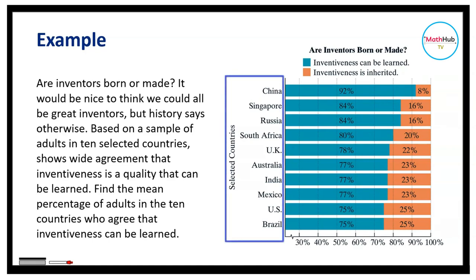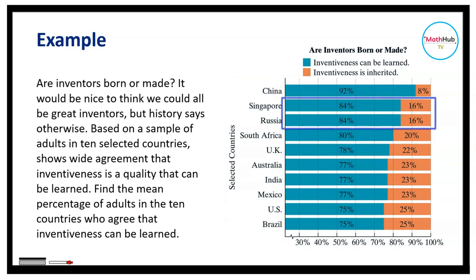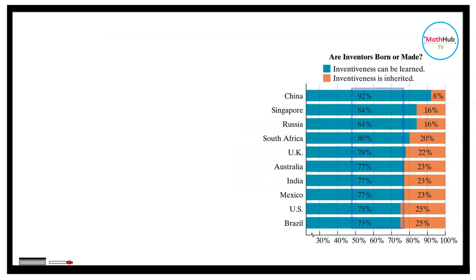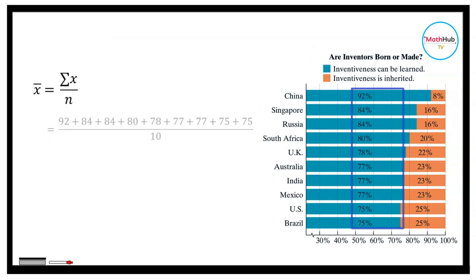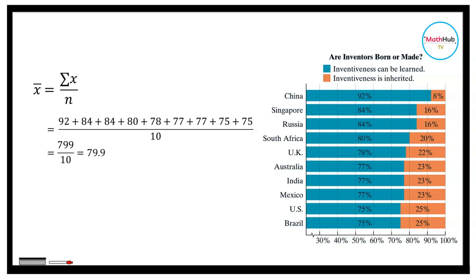These are the selected countries. In Singapore and in Russia, 84% say that inventiveness can be learned. To find the mean, we will add all the percents for the countries and divide by 10. Adding all the percents gives us 799 divided by 10, which is equal to 79.9. So 79.9% is the mean.